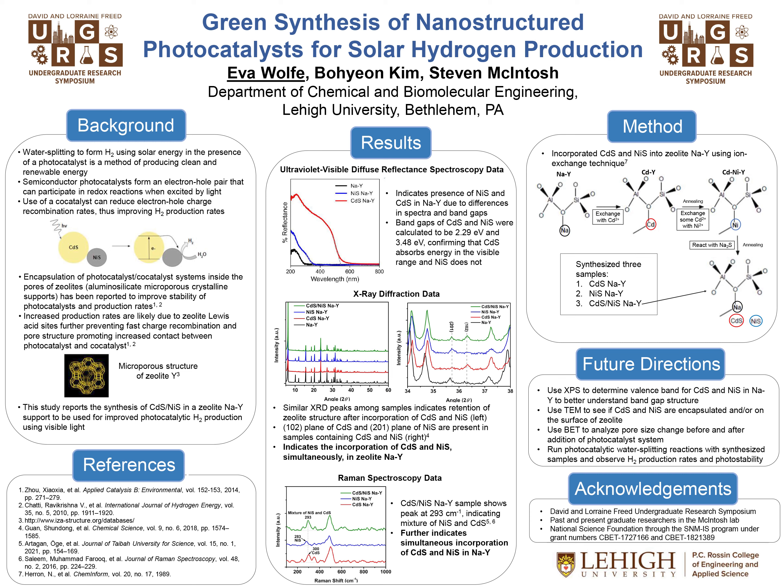When an electron is excited from the valence band to the conduction band, a hole — which is the absence of an electron — is formed in the valence band. The diagram in the background section shows an electron being excited to the conduction band in a cadmium sulfide semiconductor when light is introduced. This electron can be used in redox reactions such as the reduction of water to form hydrogen gas.